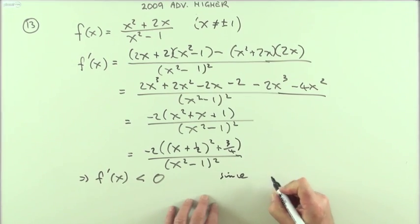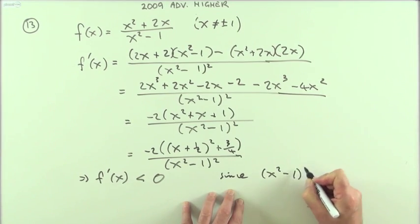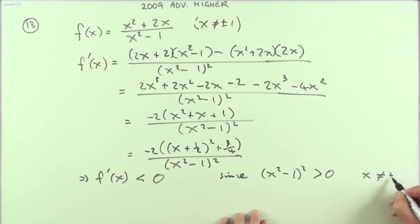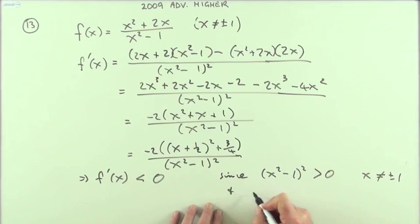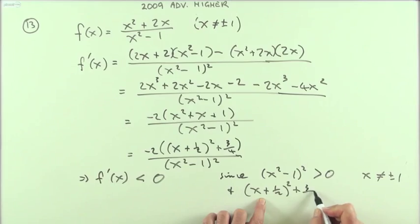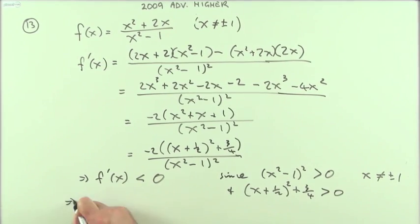Then I can say for certain that f'(x) is always less than 0, since those parts are positive. I'd have to make a statement to justify that: x ≠ ±1. And obviously this doesn't require any qualification, because even if that could be 0, as soon as you add on 3/4, that's definitely greater than 0. Which means f(x) is strictly decreasing.